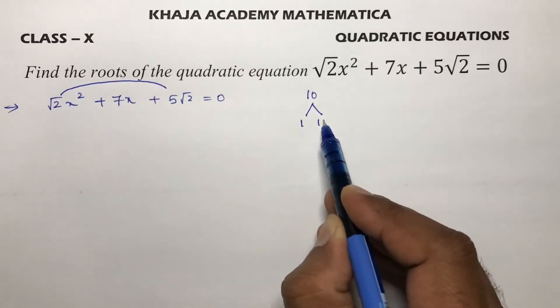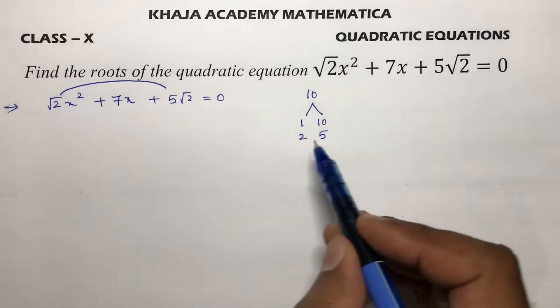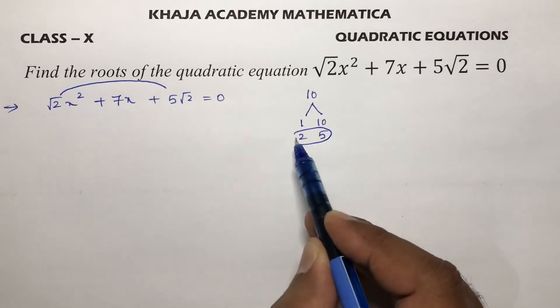The factors of 10 are 1 into 10 and 2 into 5. Now, see here I need 7, so I'll take this pair 2 and 5 factors.